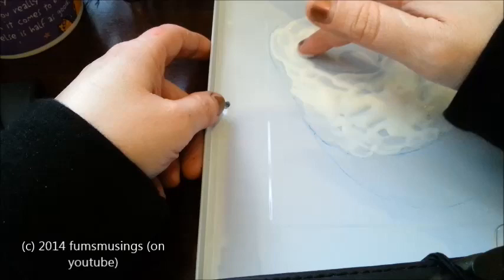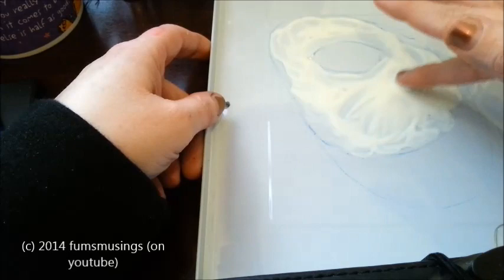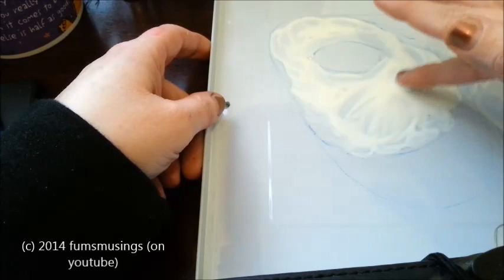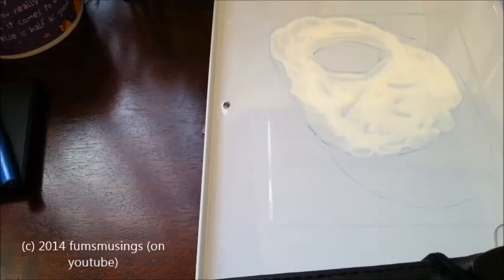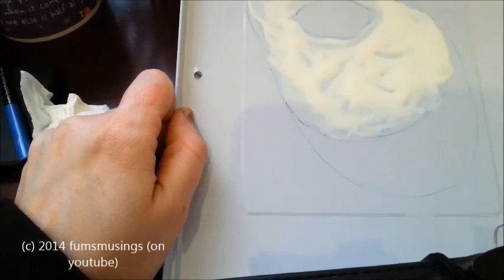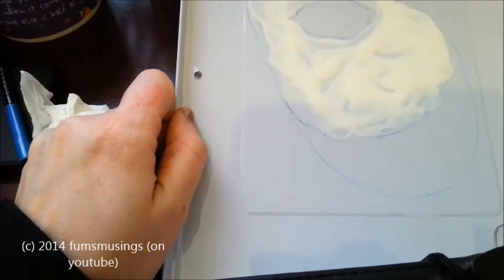And I'm not smoothing it down completely because I want a texture to this when it's dried. So as you can see there's gaps and lumps and bumps which is what I want. So it looks like that so far.